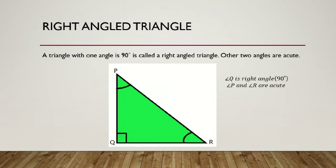Right angle triangle — a triangle with one angle of 90 degrees is called a right angled triangle, and the other two angles are acute. In triangle PQR, angle Q is 90 degrees, and angle P and angle R are acute, meaning less than 90 degrees.